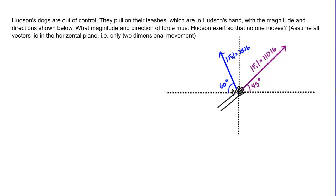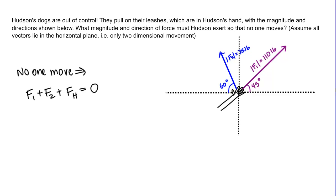What we want to figure out is what force vector Hudson must exert so that no one moves. For no one to move, that implies the system is in what we call equilibrium. For that to happen, force 1 plus force 2 plus what I'm going to call force H — which is the force that Hudson is exerting — these must equal zero. These force vectors must equal zero for no one to move. We know F1 and F2, so we'll be able to solve for FH, and that's our goal.